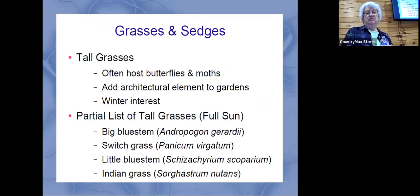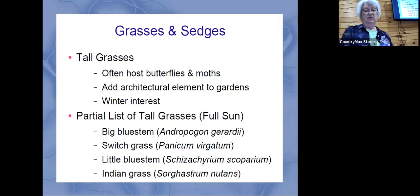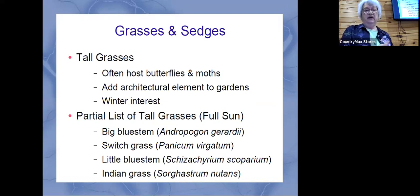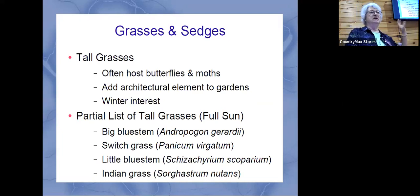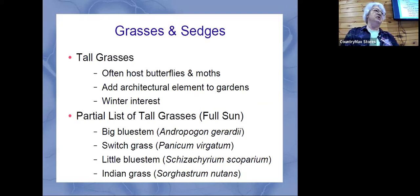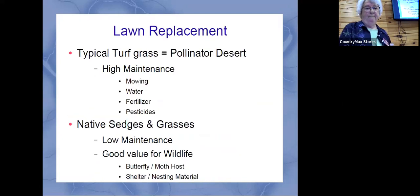You can also use grasses and sedges — there are all different sizes depending on what area you have, and some take more moisture than others. They also have some winter interest. People typically leave their grasses, especially the taller ones, over winter because they retain all the seeds that birds and animals can use. Then very early spring, you just cut them off at the ground and they start to sprout up.